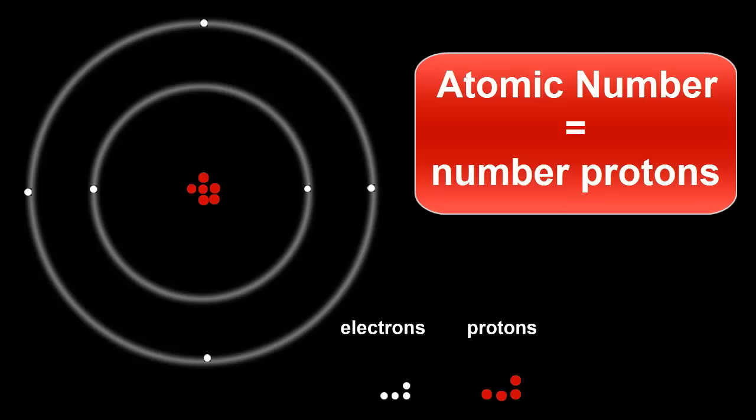We could have defined the atomic number as the number of electrons, as this is the same as the number of protons in an atom. However, electrons can sometimes be swiped off the outside shell of an atom, or an atom may grab an extra electron or two. So this number of electrons can vary from time to time. Protons live in the nucleus, which is locked away from the outside world, and their numbers don't vary, usually. This is a better definition.